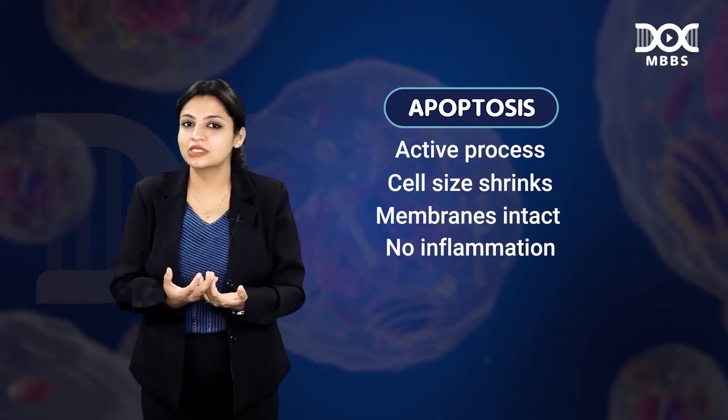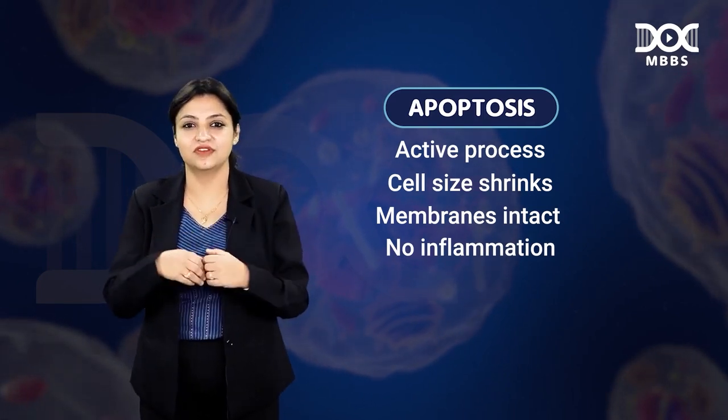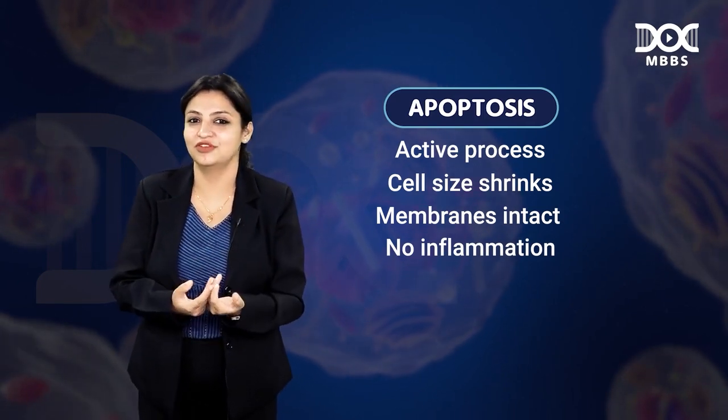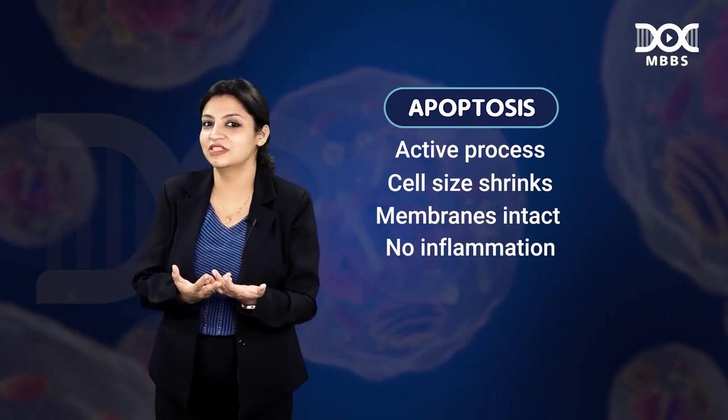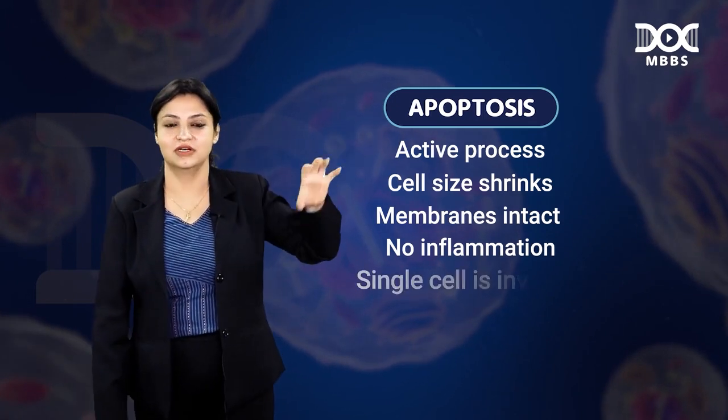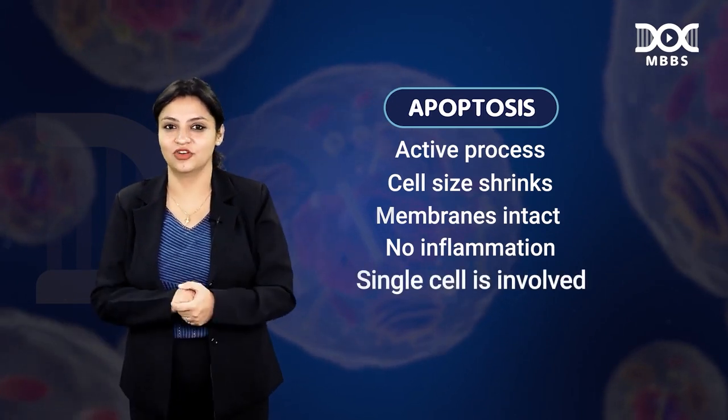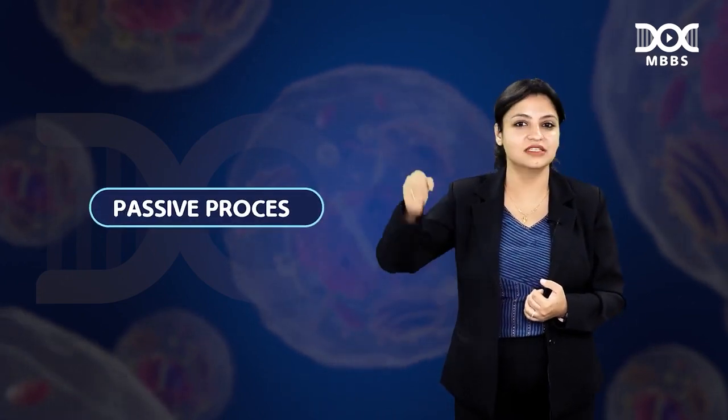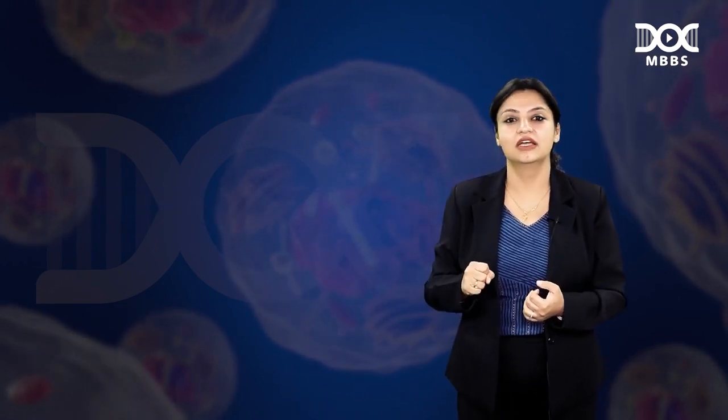Usually, who does suicide? A single person. If your girlfriend has left you, only one person is going to do suicide. So apoptosis involves a single cell. Now let us revert to necrosis — necrosis means murder. A person is walking on the road and does not even know he is going to get murdered today. So necrosis is a very passive process.